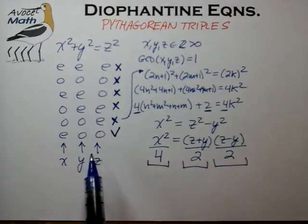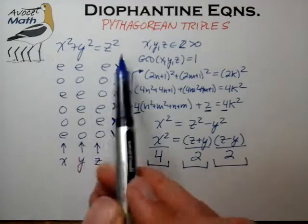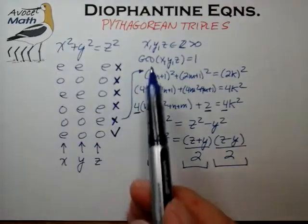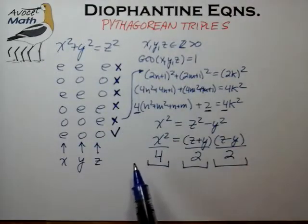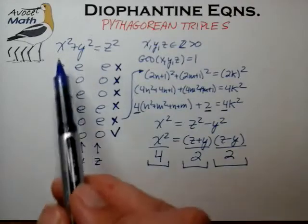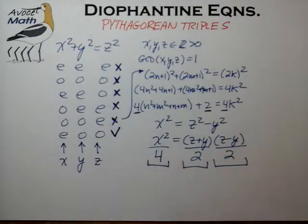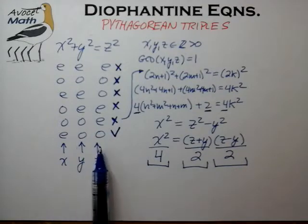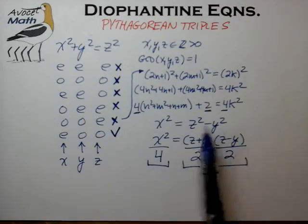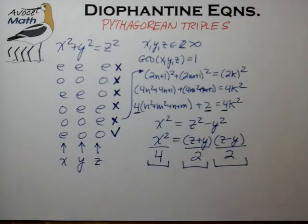At this point we'll break off this lecture episode and pick up in the next video. We've gotten pretty far — we've taken the Pythagorean relationship, defined the exact solution set we're looking for, and reduced the possibilities to the case of x being even, y being odd, and z being odd, with the general equation to tackle further in the next video. We'll see you then. Take care. Bye.